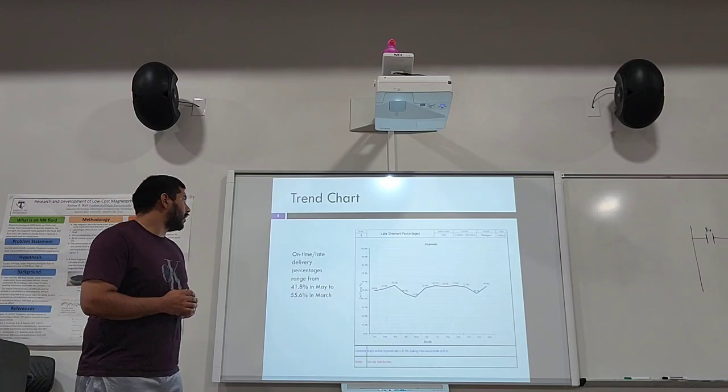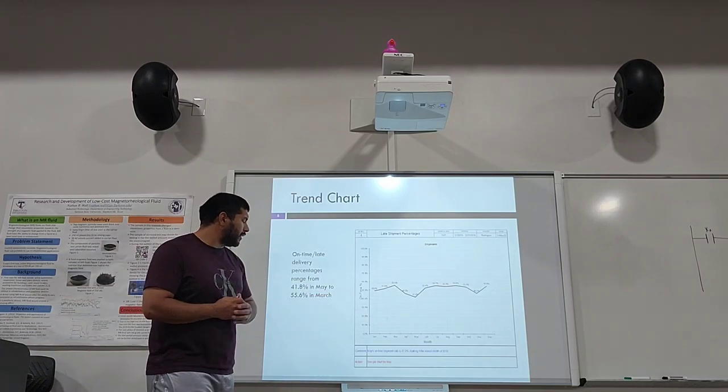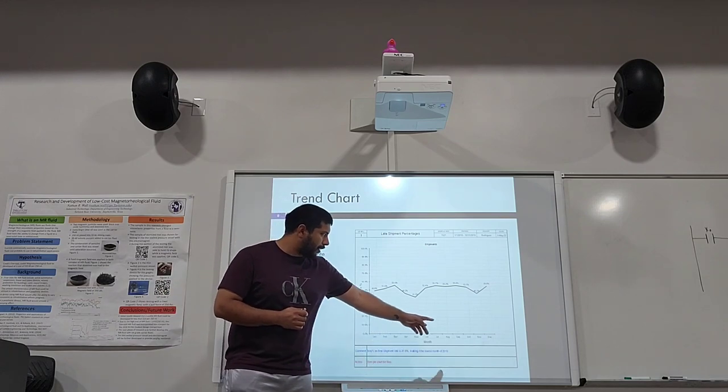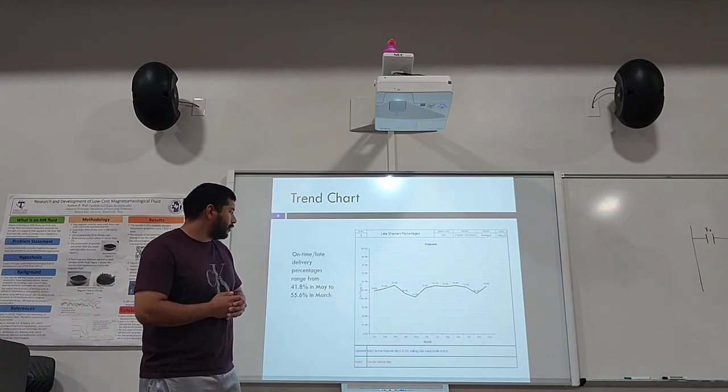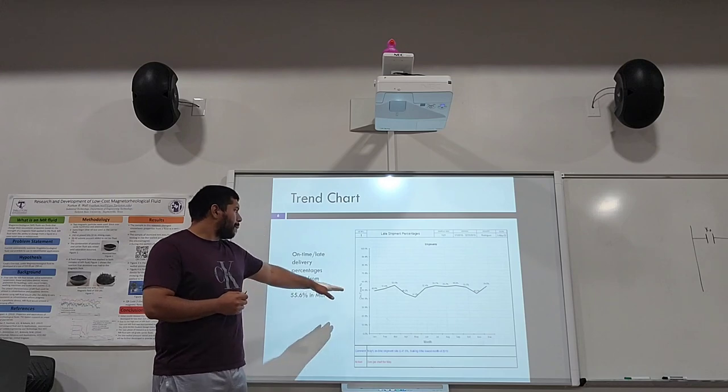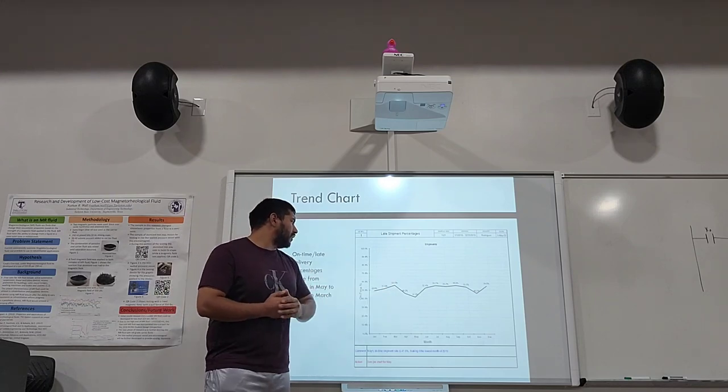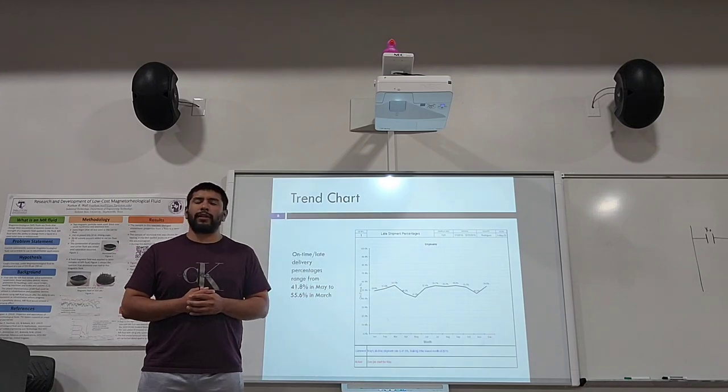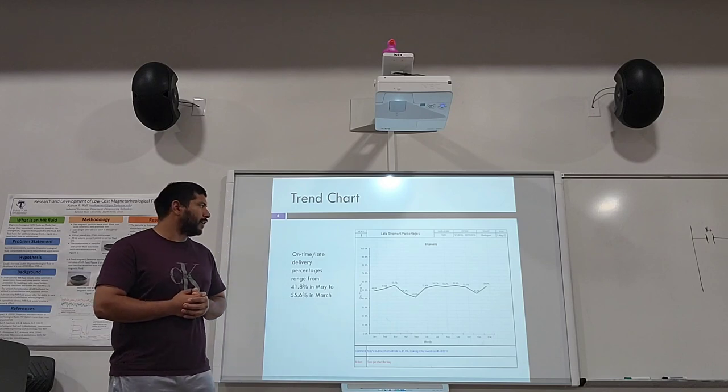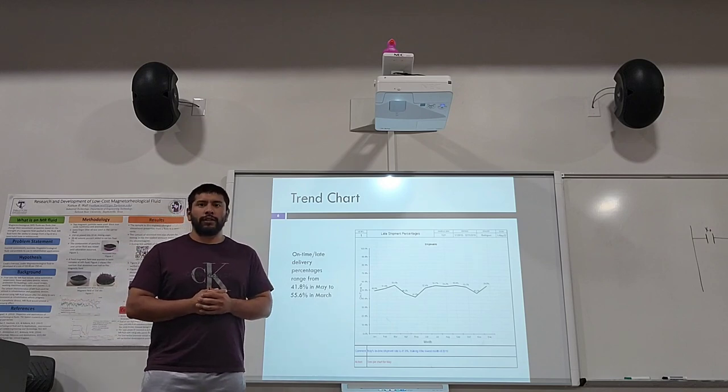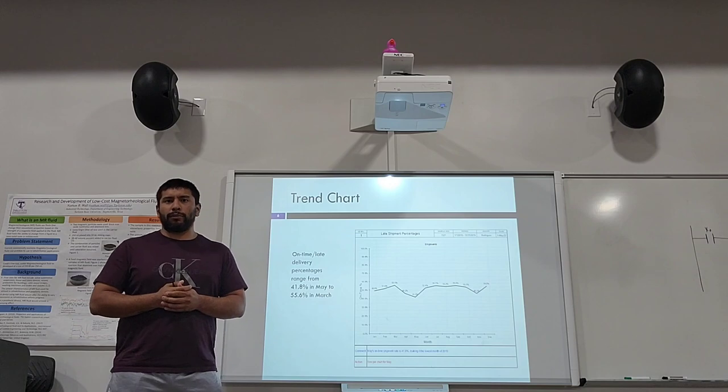For our trend chart, here you can see for each month, January, February, March, April, May, all the way to December, for the year 2010, that the trend line for the on-time to late percentages fluctuate around 50 percent, which gives us the average of 51.3 percent.